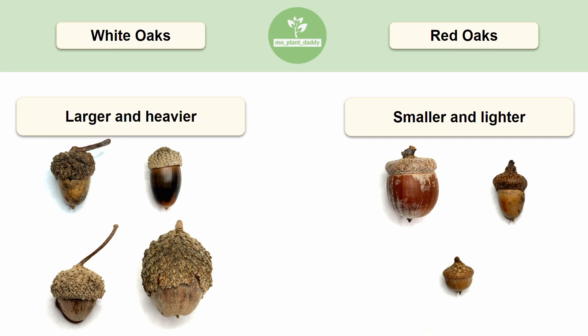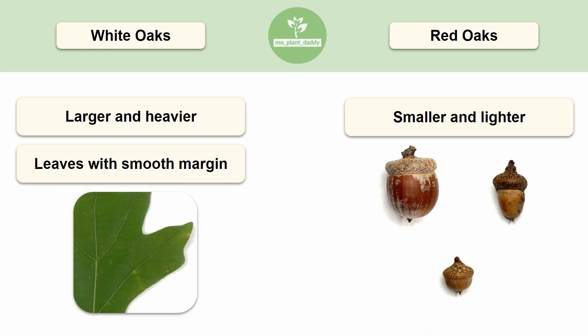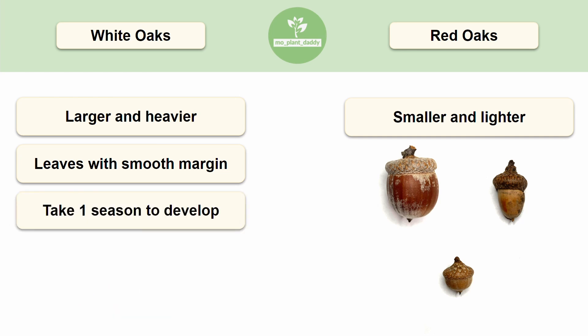Let's talk about a few more distinguishing traits of red and white oaks before we get too deep into our acorn identification. White oaks produce leaves that have a smooth margin, and they generally have acorns that take only one season to develop.